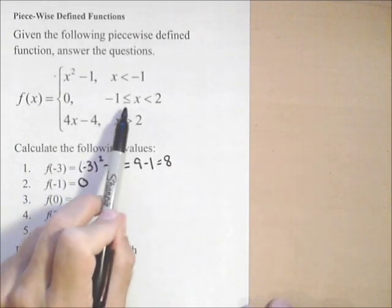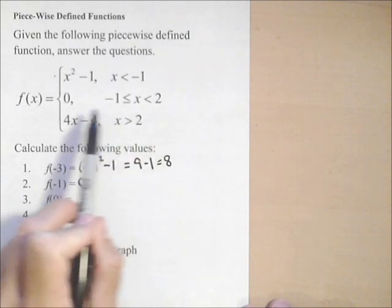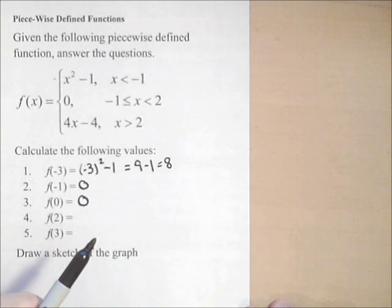f of zero, we look for which interval zero is in. Zero is between negative one and two, so once again, it's this piece, or it's just zero because that's what the output is.